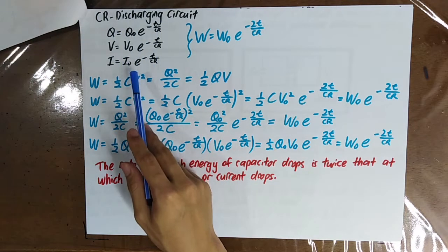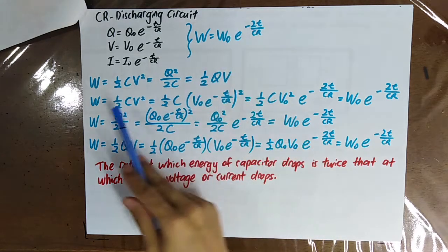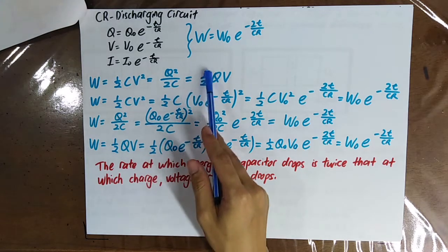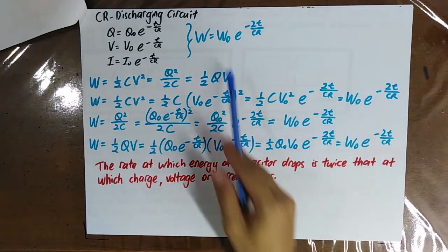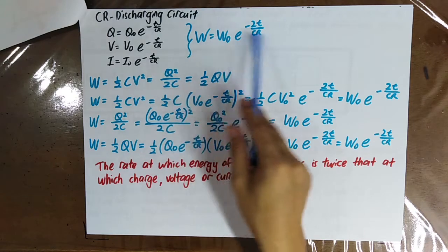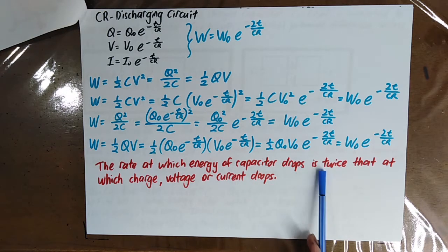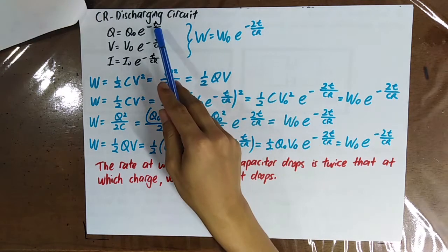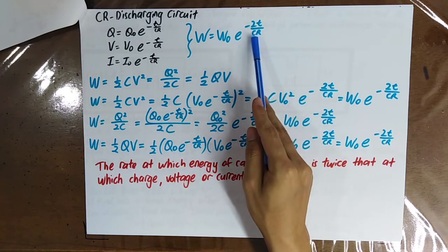On top of these three formulas, I also want to show you the energy formula. You can use W equals half C V squared, or Q squared over 2C, or half QV. By any of these formulas, you can prove the energy formula. I want to remind you that the rate at which the energy of the capacitor drops is twice that at which the charge, voltage, or current drops. For example, if the period is T and 2T, the rate for energy is twice that for charge or voltage.